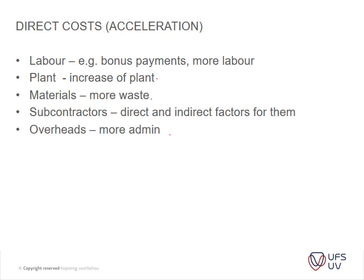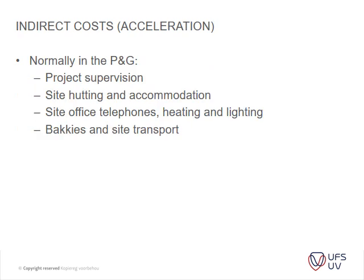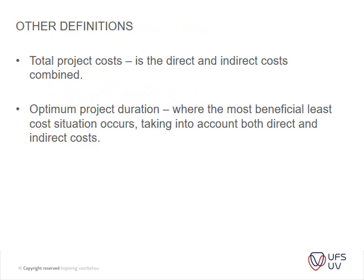Your indirect costs include your normal preliminaries — for instance, project supervision, site huts and accommodation, site office, telephones, heating, transport, and so forth. Your total project cost is the direct and indirect costs combined. The optimum project duration is where the most beneficial, least-cost situation occurs taking both into account.